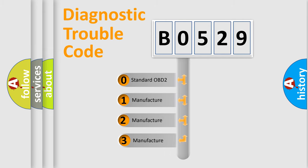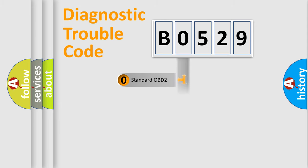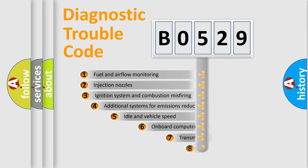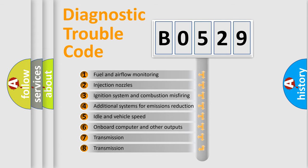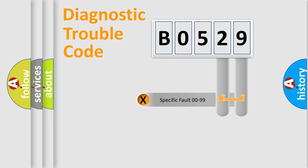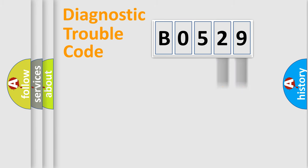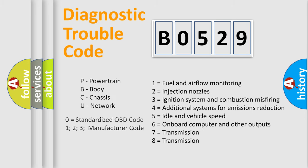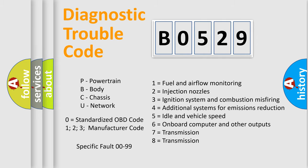If the second character is expressed as zero, it is a standardized error. In the case of numbers 1, 2, or 3, it is a manufacturer-specific error expression. The third character specifies a subset of errors. This distribution is valid only for the standardized DTC code. Only the last two characters define the specific fault of the group, and this division is valid only when the second character is zero.